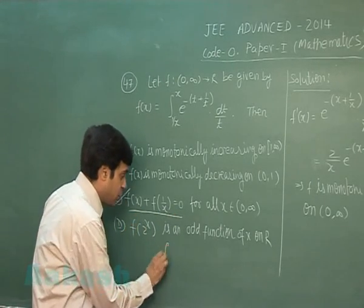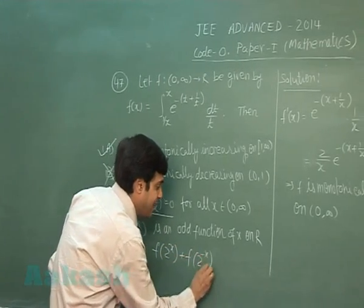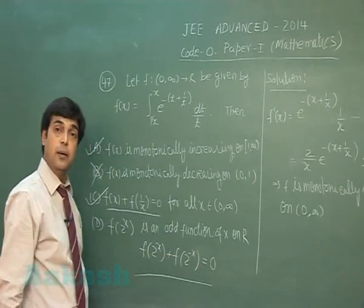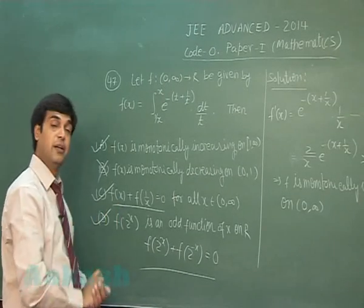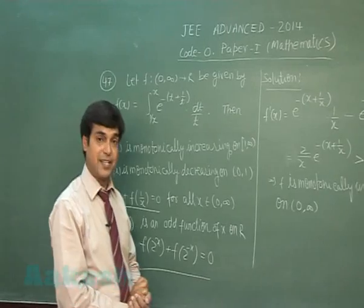this functional equation gives me the result. What it produces? It produces f(2x) + f(2^(-x)) = 0. Means clearly the function is odd. Hence, a, c, d are correct. Let's move to the next one.